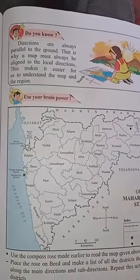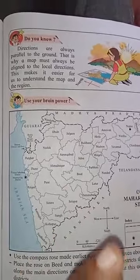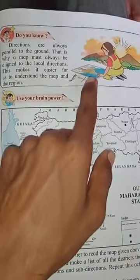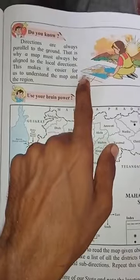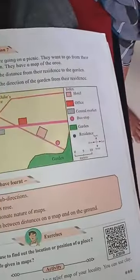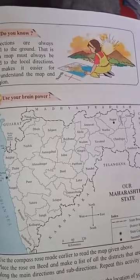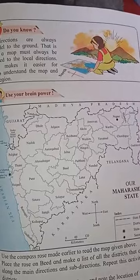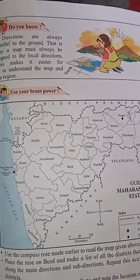The huge distance between two places on the ground is shown in such a way that it fits on a smaller paper. Distance on the map is made proportionate to the distance on the ground. For example, suppose the distance between Rasika's and Reshma's house is 10 kilometers. If the scale is 1 centimeter equal to 1 kilometer, then 1 centimeter distance is maintained between the two houses on the map.